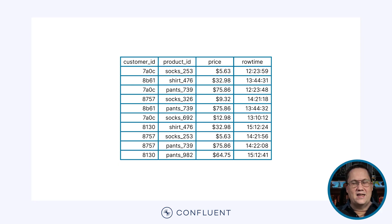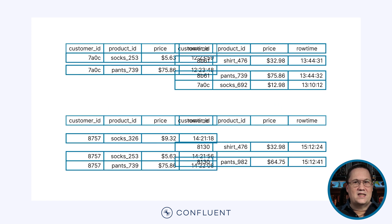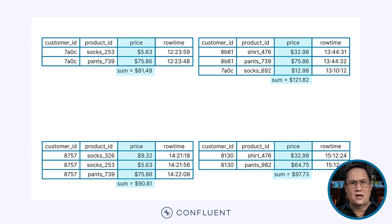Imagine a business that collects details about product sales. They keep the data in a static database table that includes the customer ID, product ID, price, and timestamp. If we wanted to aggregate the data every hour, it's easy to separate the table into discrete batches based on the time. Then we can compute an aggregate such as the sum of the price for each of the batches.